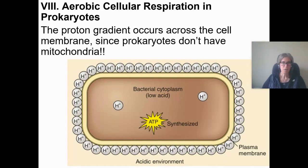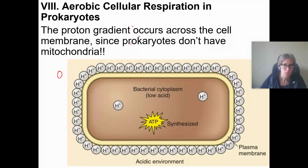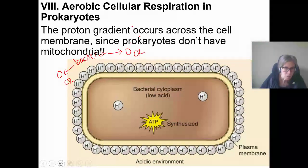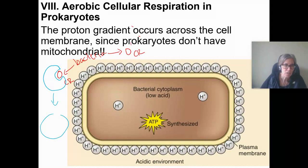Welcome to AP Biology. Today I want to talk about aerobic cellular respiration in prokaryotes. We've talked a lot about aerobic cellular respiration in mitochondria — it's really the same stuff in bacteria. If you think about the early evolution of mitochondria, they started out as bacteria. There were bacteria that were really good at cellular respiration, and a eukaryote came along and engulfed it — that's the endosymbiosis theory.